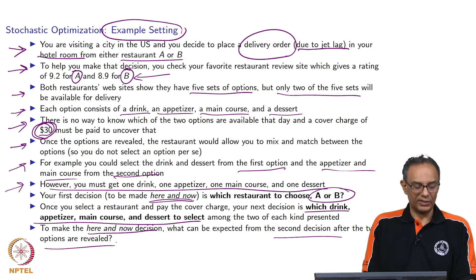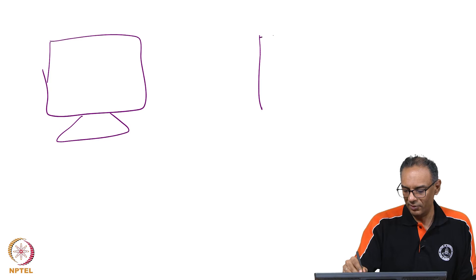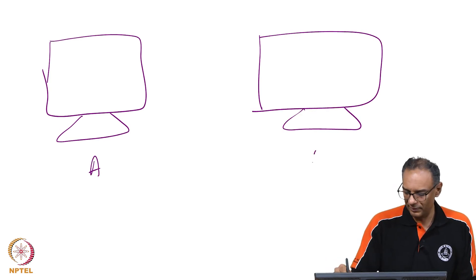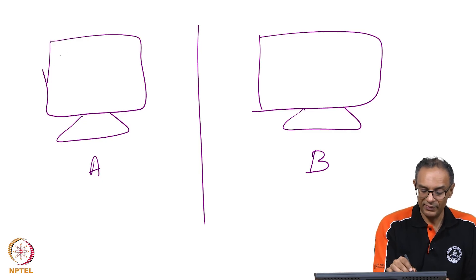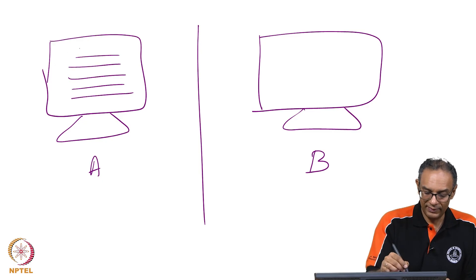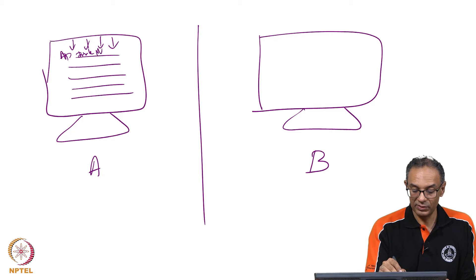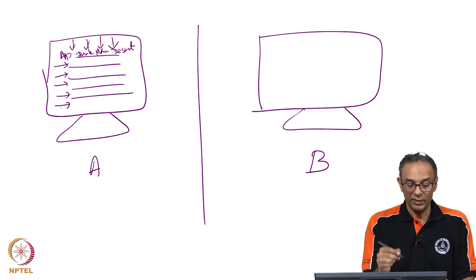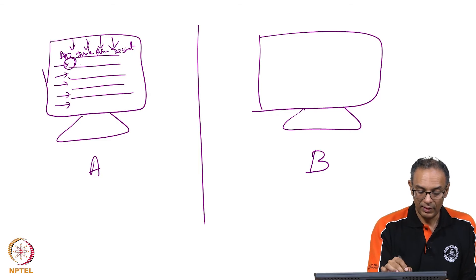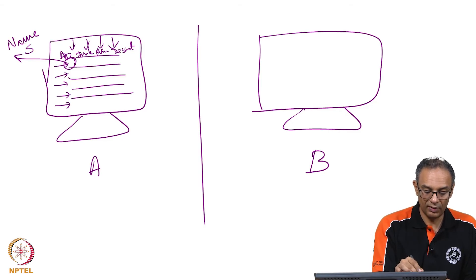Let me summarize what you just saw one more time. Essentially, you go to two websites — I am drawing two screens to show restaurant A and restaurant B. You will see them one at a time. Restaurant A will list five options: one, two, three, four, and five, each showing an appetizer, drink, main course, and dessert. What you will see is the name of the item and the price. So you will see five times four — twenty dollar amounts and items listed.